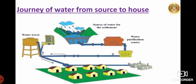Here we will see the journey of water from source to house. Tanks are used to store water, which leads to a water purification plant. Through big pipes, water is released for some time from the tanks according to the need of people. The pipe branches out into smaller and smaller pipes, which take water to every house.